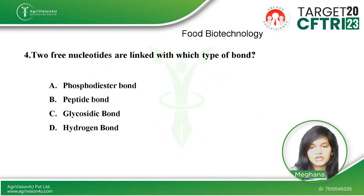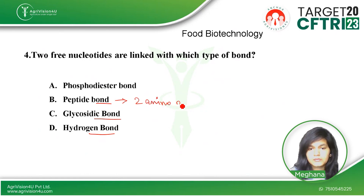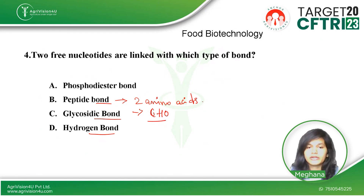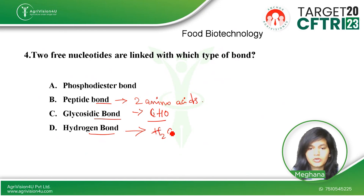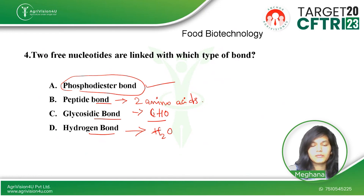Two free nucleotides are linked with which type of bond? This question is taken from food biotechnology. The first option is the phosphodiester bond, the next is the peptide bond, glycosidic bond, and the hydrogen bond. The peptide bond is formed between two amino acids, whereas the glycosidic bond is between two carbohydrates or a carbohydrate and an alcohol with an ether. The hydrogen bond is seen in water or in DNA strands with a complementary pair. The right option is the phosphodiester bond — nucleotides are linked by a phosphodiester bond.